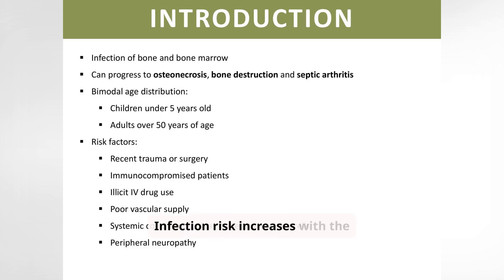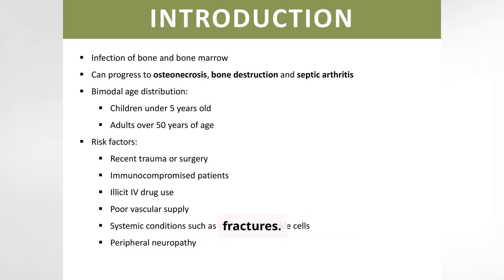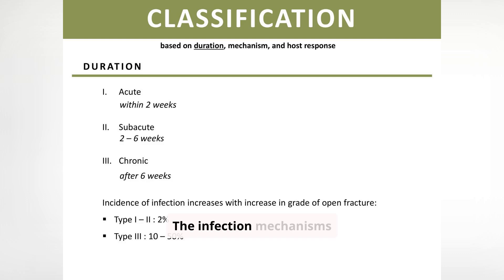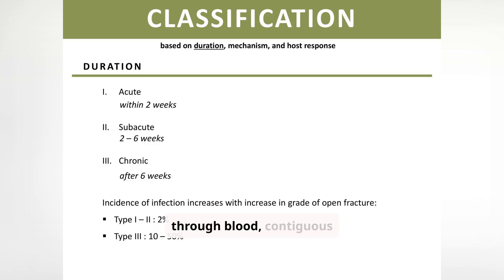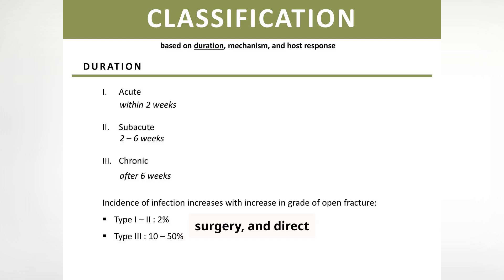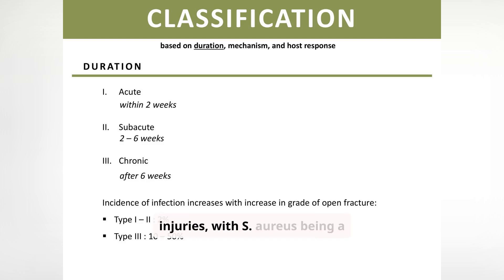Infection risk increases with the severity of open fractures. The infection mechanisms include hematogenous spread through blood, contiguous spread from trauma or surgery, and direct inoculation from penetrating injuries, with S. aureus being a common pathogen.